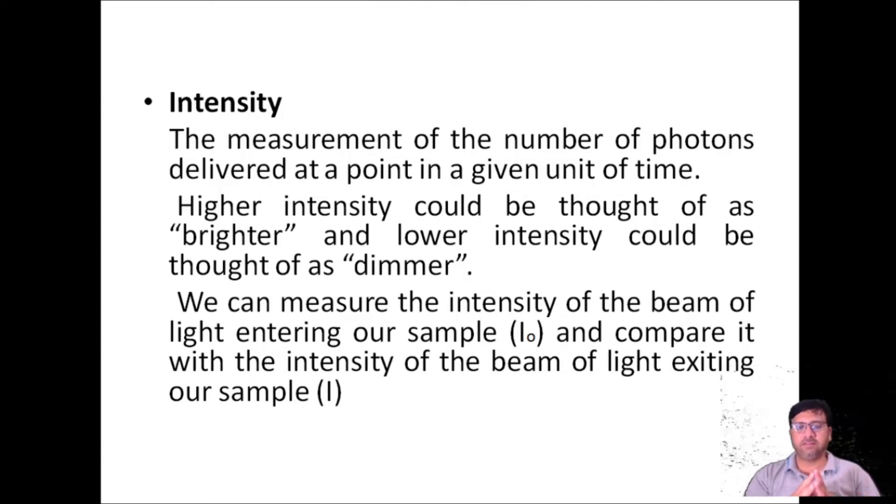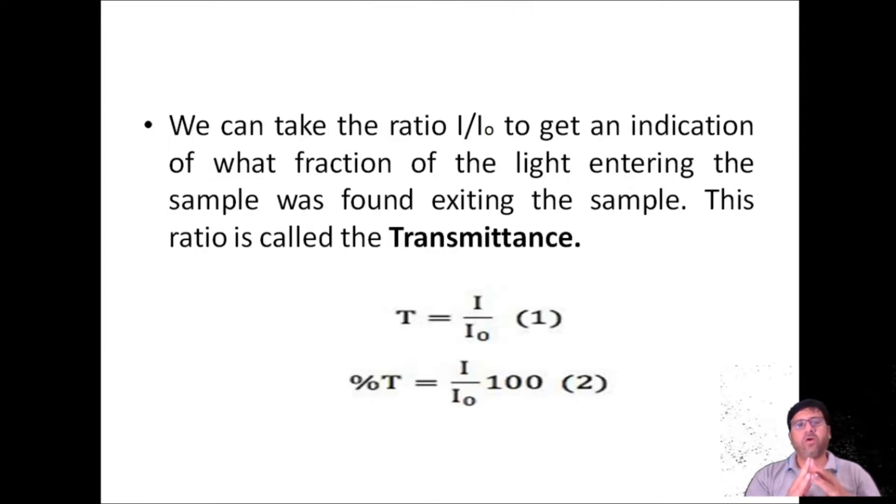The intensity of the incident radiation and the transmitted radiation. We can take the ratio of transmitted radiation and incident radiation to get an indication of what fraction of the light entering the sample was found exiting the sample. This ratio is known as transmittance.